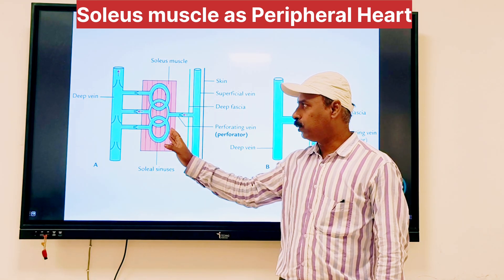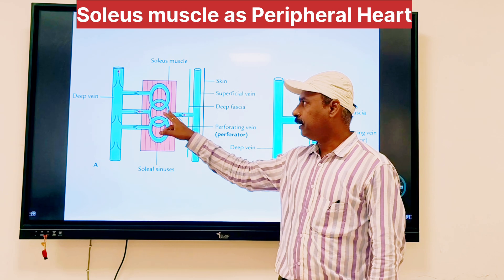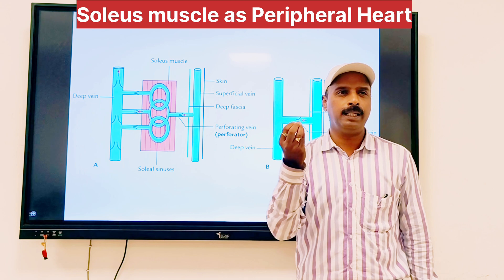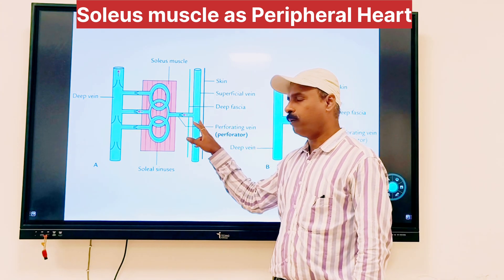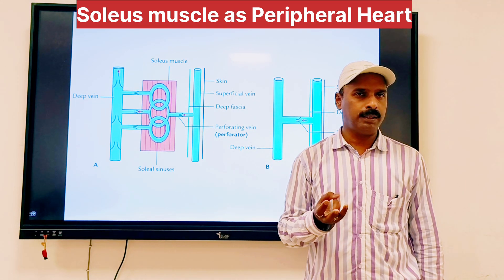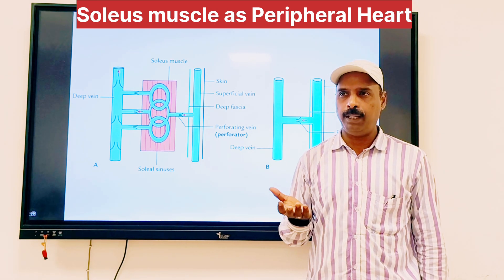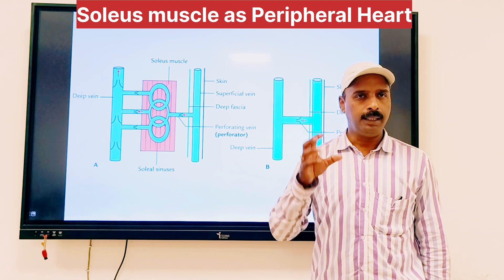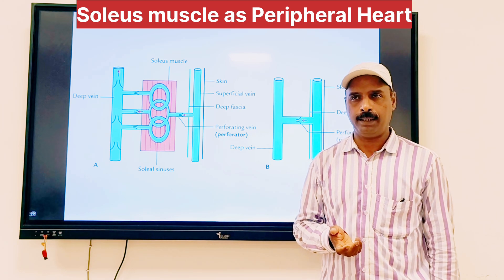The soleus muscle has sinuses inside the muscle — small tributaries of the veins. We have superficial veins: the great saphenous vein and short saphenous vein. We have deep veins: the popliteal vein, femoral vein, anterior tibial vein, and posterior tibial vein. These are the deep veins, and the superficial veins are the great and short saphenous veins.